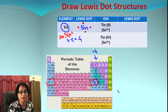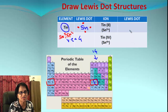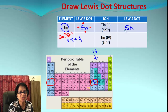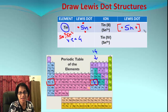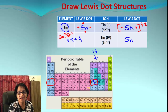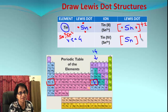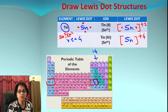Those four valence electrons come from 5s² and 5p². Tin can lose all four electrons or only the two p electrons. If it loses all four, we get a positive four ion; if it loses only two, we get positive two. When tin loses two electrons, two electrons remain, giving us the Sn²⁺ ion — shown with parentheses brackets and a charge of positive two. If tin loses all four electrons, there are no valence electrons around it and the charge is positive four.